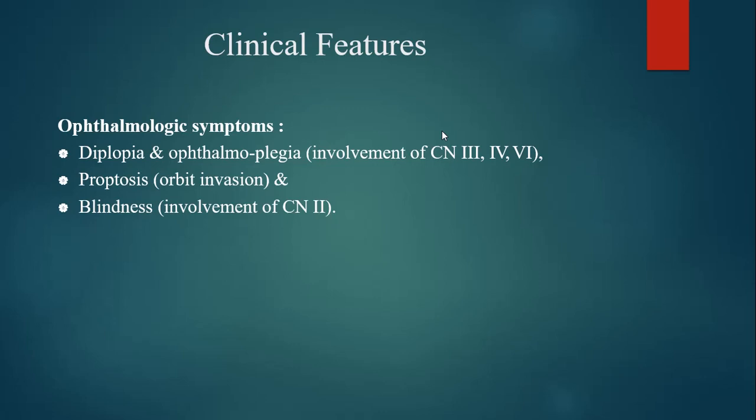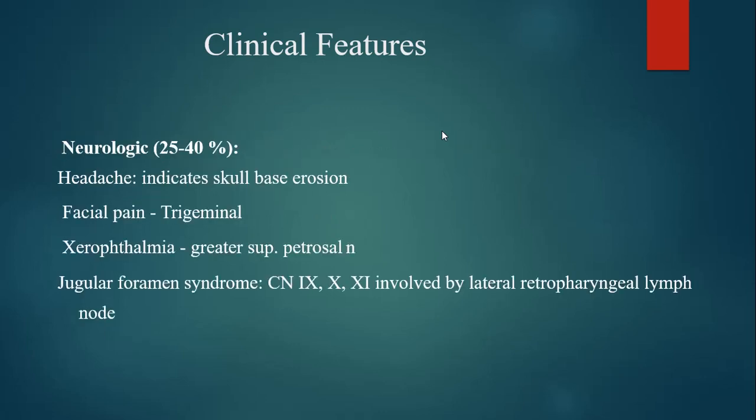Ophthalmologic symptoms include diplopia and ophthalmoplegia if there is involvement of cranial nerves 3, 4, and 6. There can be proptosis if there is orbital invasion, and blindness if there is involvement of the optic nerve. About 25 to 40% of patients present with headache indicating skull base erosion, facial pain indicating involvement of the trigeminal nerve, and xerophthalmia indicating involvement of the greater superficial petrosal nerve.